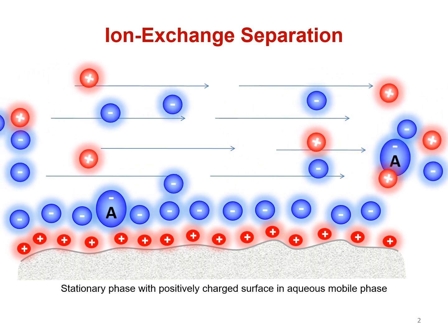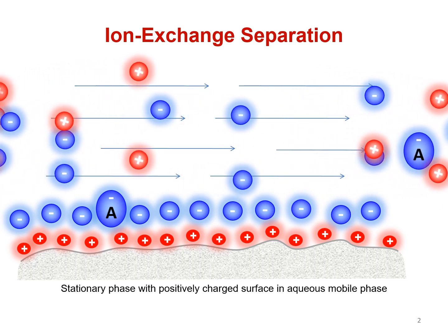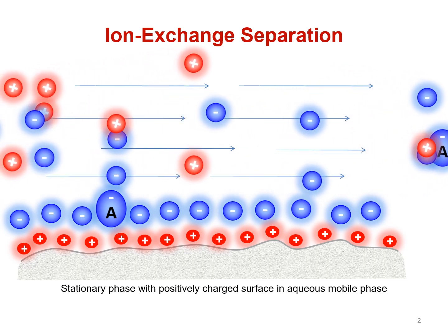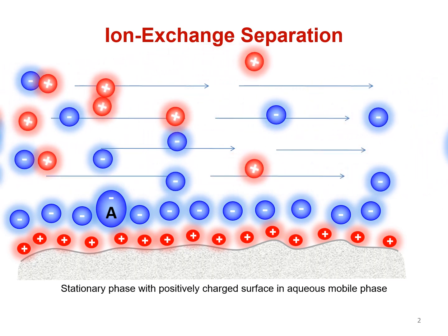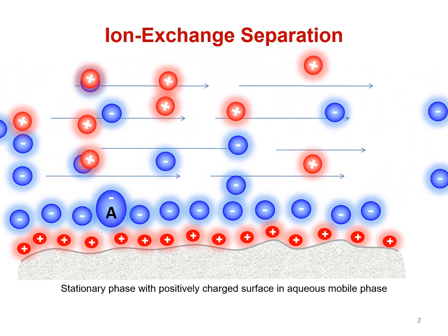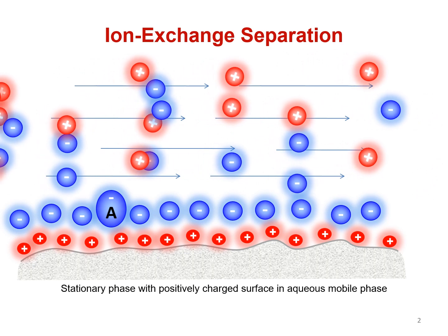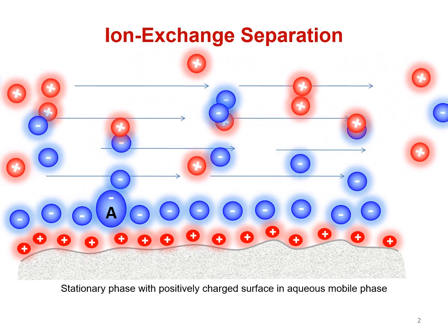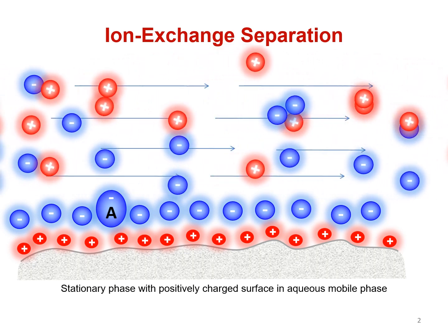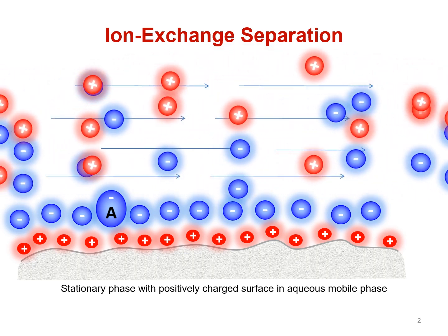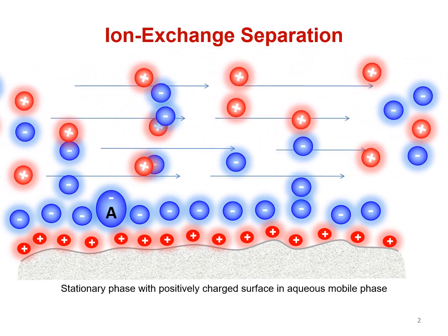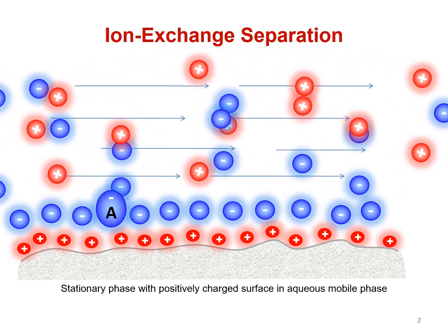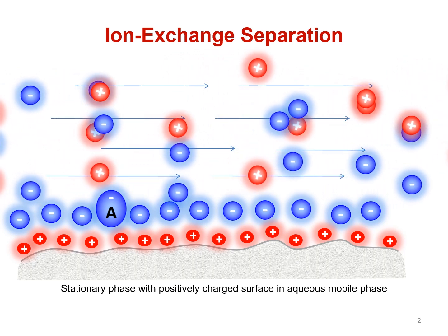In order to facilitate this process, an ionic modifier in the mobile phase is required. In most cases, this process is performed in an aqueous mobile phase, and the ionic modifier can be any salt, acid, or buffer.